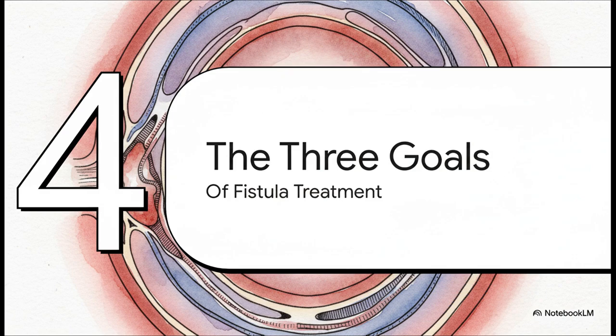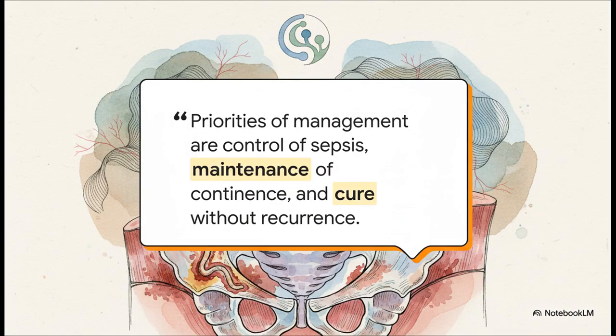Once the map is made and we know if the fistula is simple or complex, every surgeon is working toward the exact same three goals. Goal number one: control any infection. Goal number two — and this is the big one — preserve your bowel control, meaning protect those gatekeeper muscles at all costs. And goal number three: heal the fistula for good so it doesn't come back.